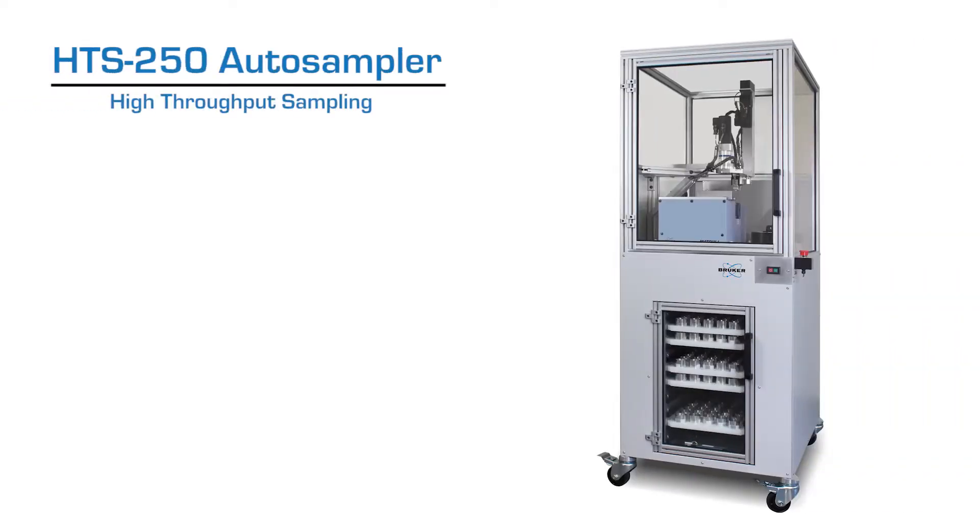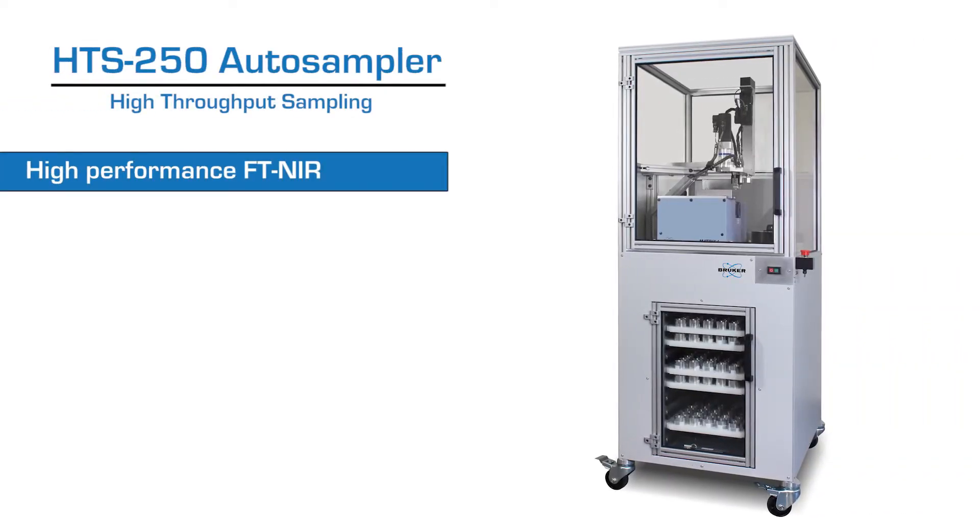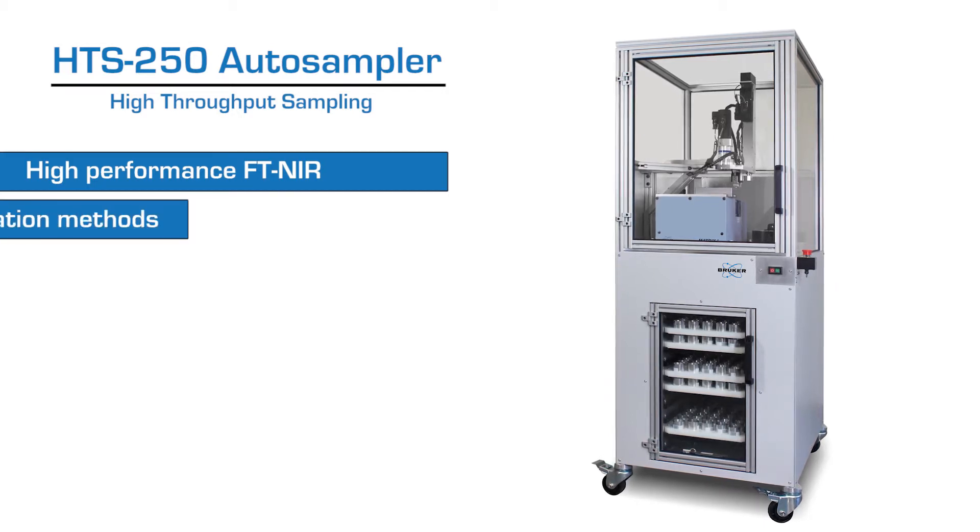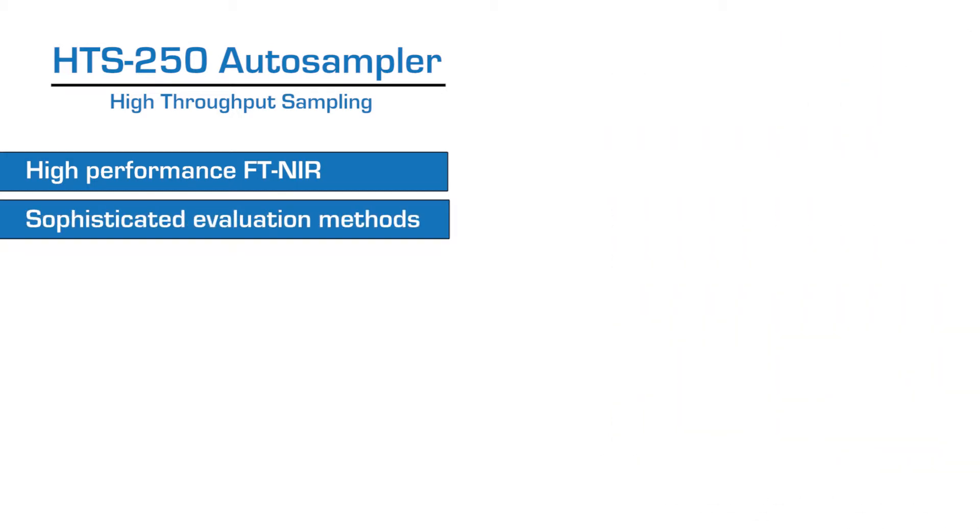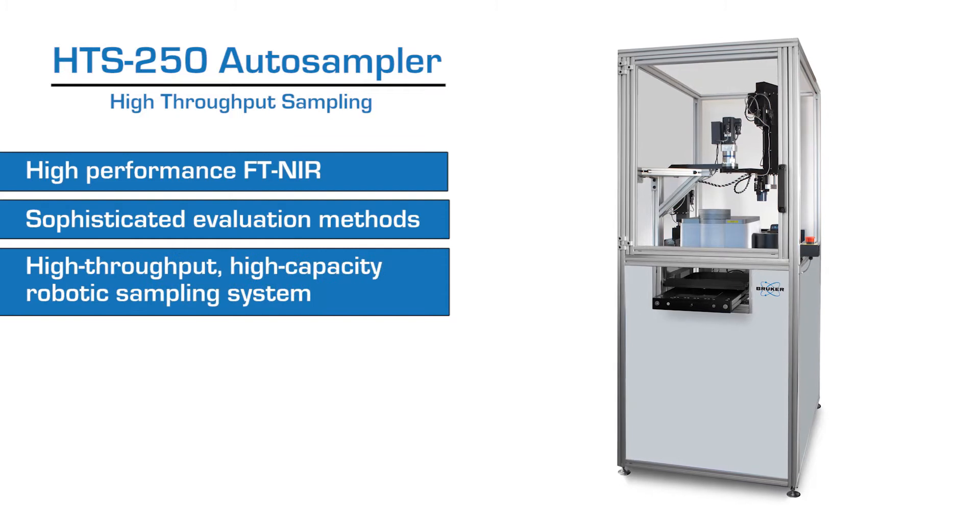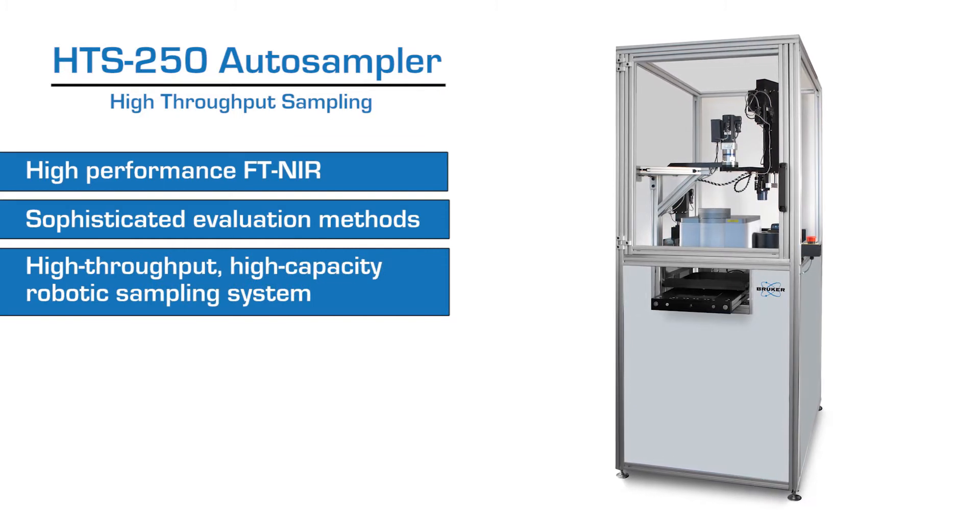The easy-to-use HTS 250 Auto Sampler combines Bruker high-performance FT-NIR with ready-to-use sophisticated evaluation methods packaged in a high-throughput, high-capacity robotic sampling system.